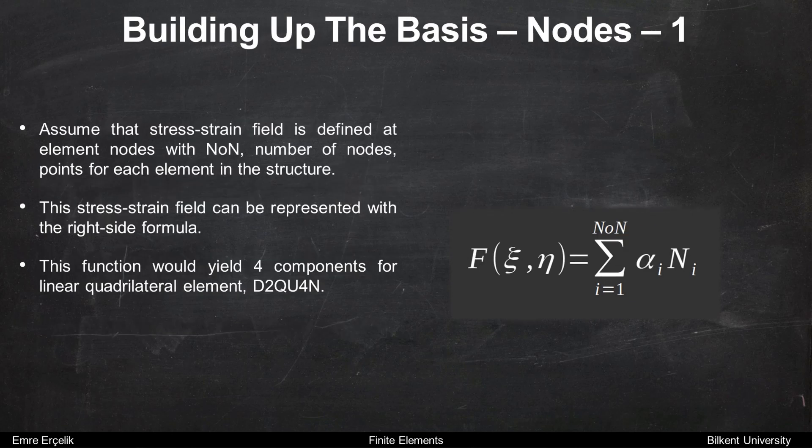Now assume that stress-strain field is defined at element nodes with number of nodes, points for each element in the structure. This stress-strain field can be represented with the right side formula. It is very similar to Gauss point one. This function would yield four components for linear quadrilateral element D2Q4N.